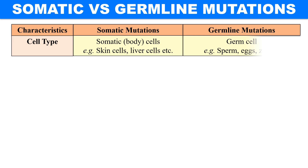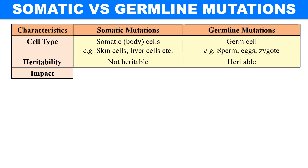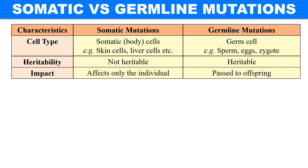Germline mutations take place in the germ cells, that is sperm and egg. The next characteristic is heritability. Somatic mutations are non-heritable, while germline mutations are heritable — meaning germline mutations can transfer from parent to offspring. Regarding impact, somatic mutations affect only the individual which carries them, while germline mutations can transfer to the offspring as well.